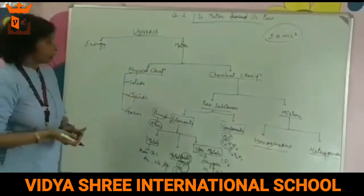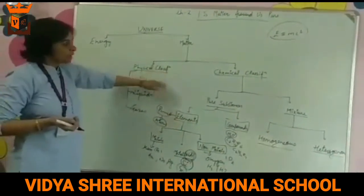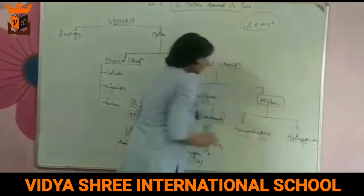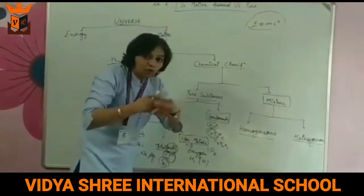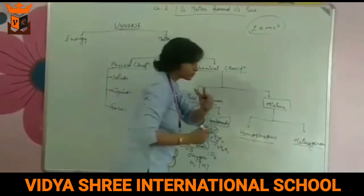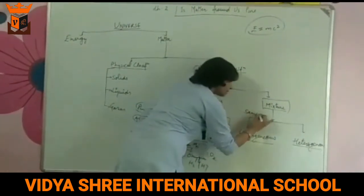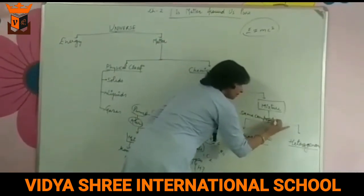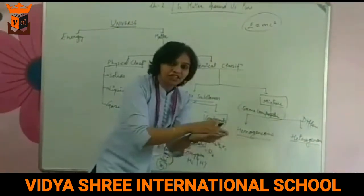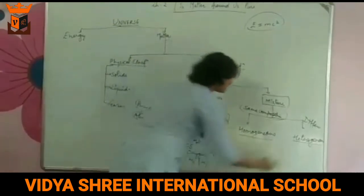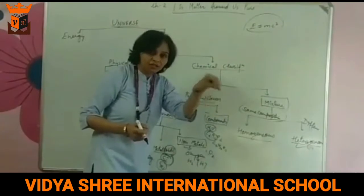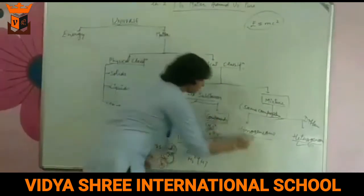Under the heading 'Is Matter Around Us Pure?', this is just a brief explanation. Now, if a mixture is there, it means no fixed proportions are there. Two types of compositions can be there: if it is of the same composition throughout, it is homogeneous; or if it is of different composition — like sand mixed with sugar where they are clearly separate — that is heterogeneous. Sugar dissolved properly in water is homogeneous.